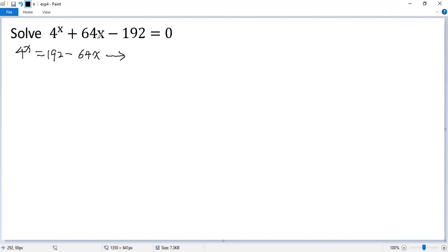192 equals 64 times 3, so we get 4 to the power x equals 64 times 3 minus x. 64 equals 4 cubed, so we get 4 to the power x equals 4 cubed times 3 minus x.